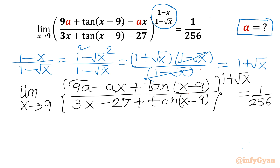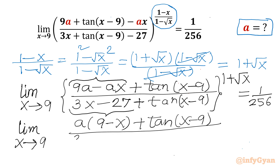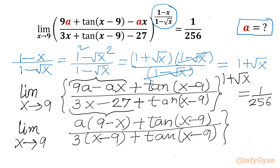Now I can see a is common in the numerator and 3 is common in the denominator. Taking these common: limit x tending to 9 of a(9 − x + tan x − 9) over 3(x − 9 + tan x − 9), raised to the power 1 + √x, equals 1/256.